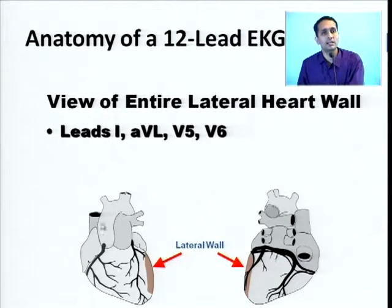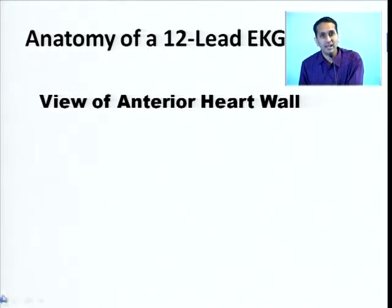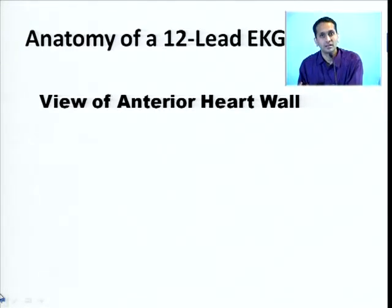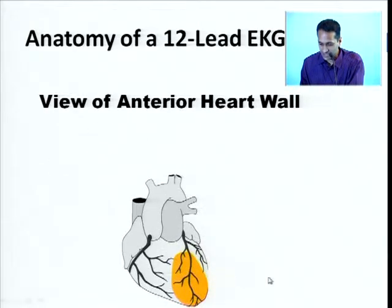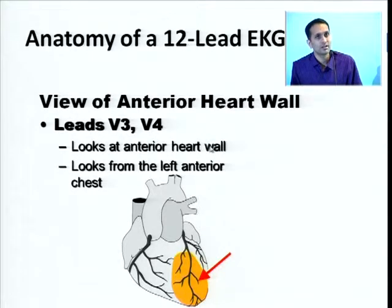If you have changes in all leads 1, AVL, V5, and V6, that means the entire lateral wall is involved — a larger area of ischemia. To summarize: 2, 3, AVF is inferior; V1 and V2 indirectly represents the posterior; 1 and AVL is high lateral; V5, V6 is low lateral; combination of 1, AVL, V5, V6 is the entire lateral. If you have V3 and V4 changes only, it represents the anterior heart wall and the vessel involved is the LAD.